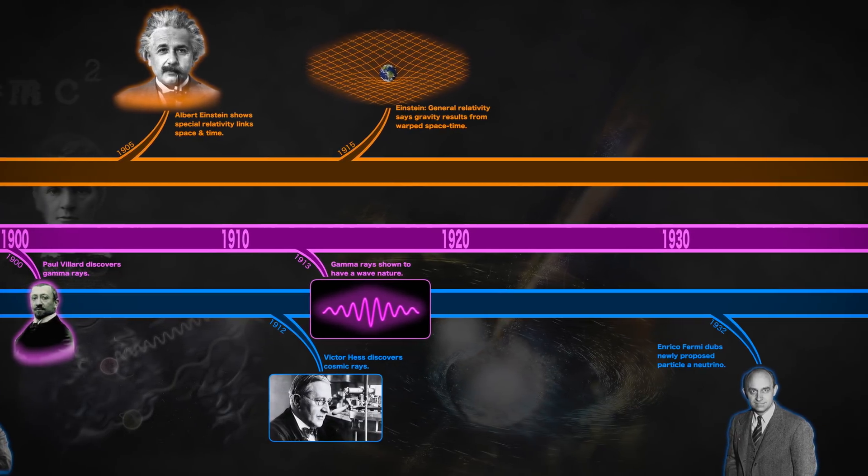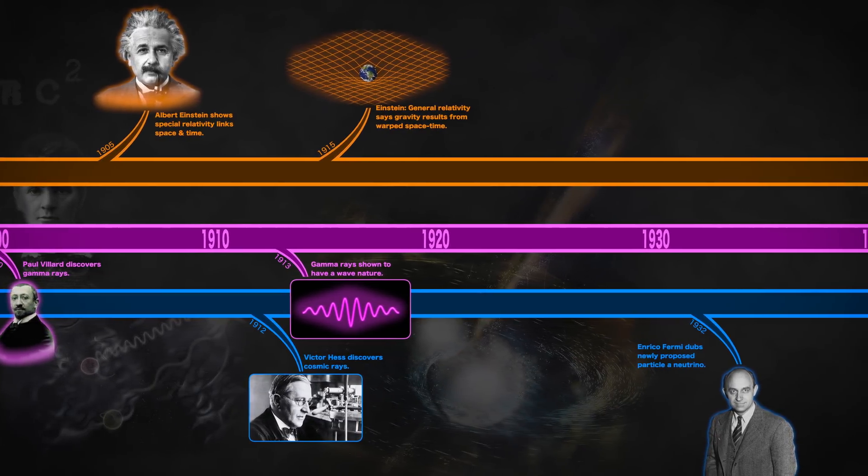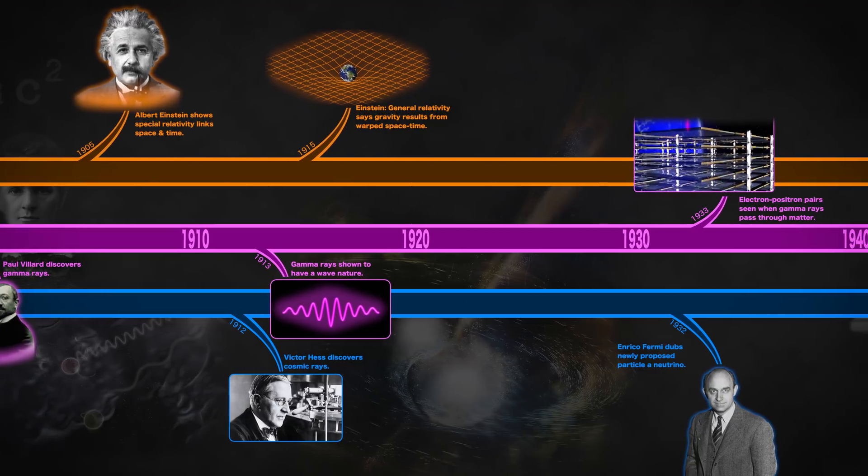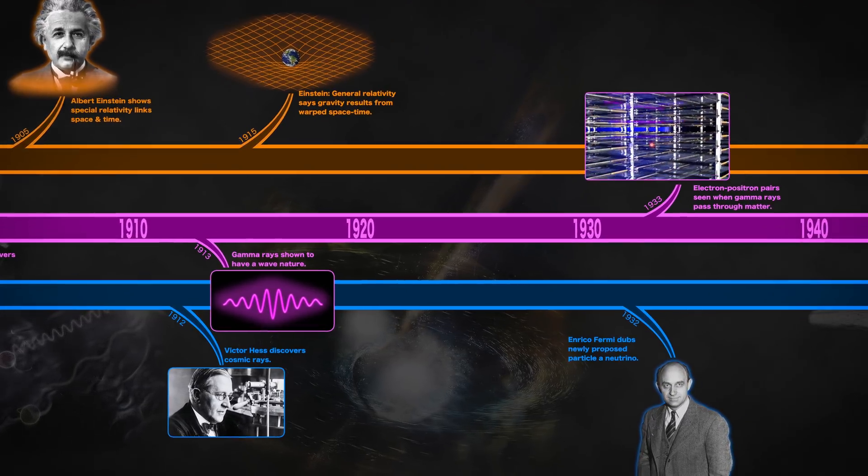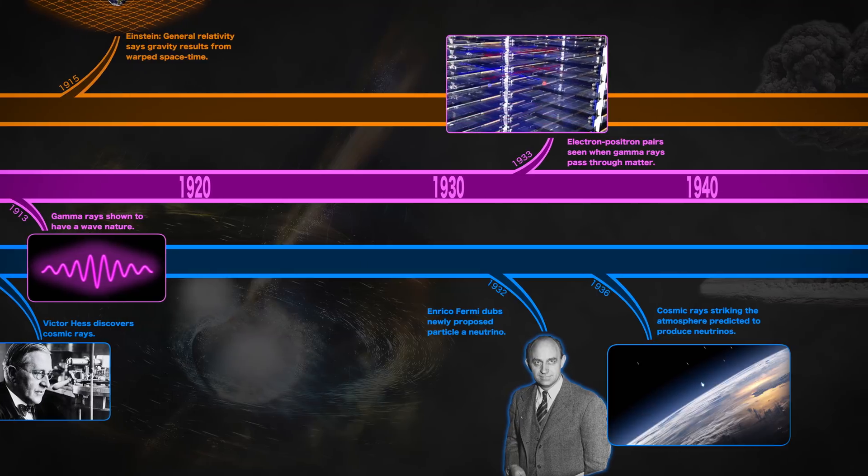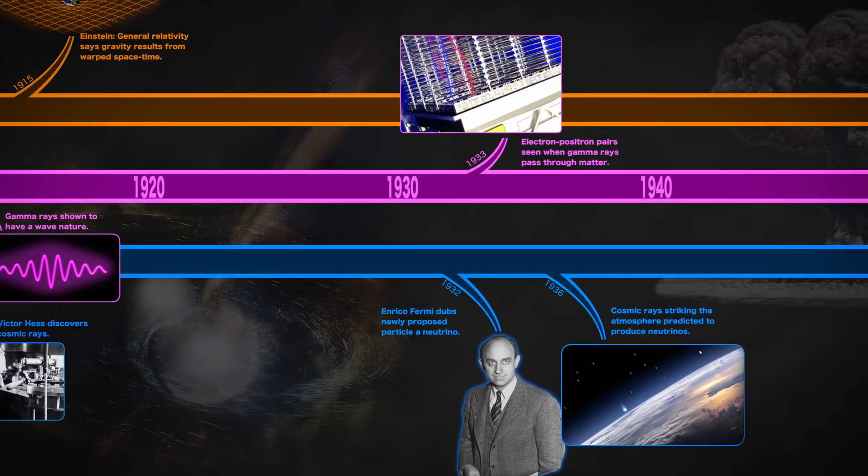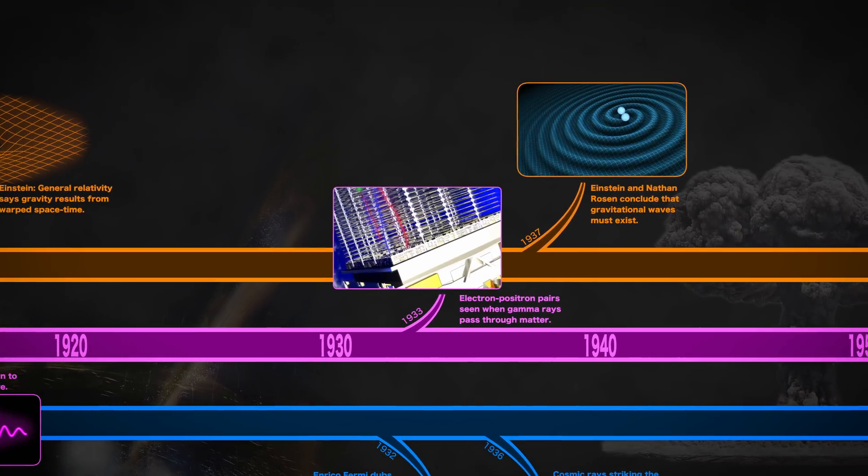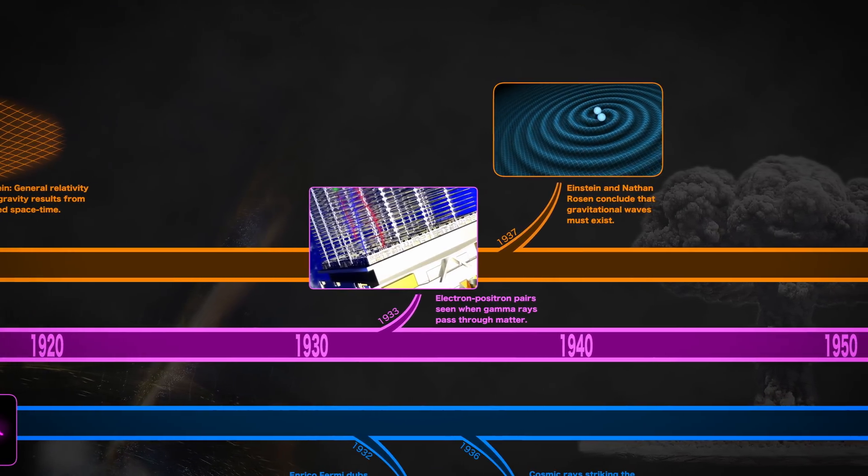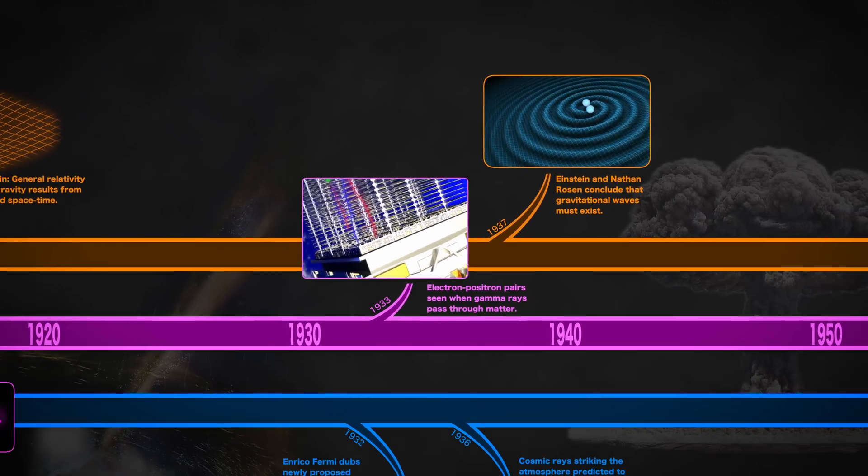As scientists probed the subatomic realm, one type of radioactive decay suggested the presence of a new lightweight particle, dubbed the neutrino. Later, Einstein and Nathan Rosen showed that accelerating masses can create gravitational waves that ripple across spacetime.